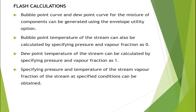To determine the dew point of a mixture, enter the composition, mass flow rates, set vapor fraction to one, and provide the operating pressure — HYSYS will automatically give you the dew point temperature. If you specify pressure and temperature instead, HYSYS calculates the vapor fraction automatically based on the stream composition. This is essentially what we do in flash calculations, and HYSYS performs it very quickly.